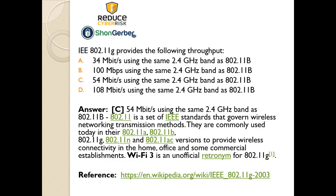You've got 802.11a, b, g, n, ac — these are the different versions available for wireless connectivity. For the CISSP, you'll have to understand what each of those bands plays into and how much throughput they can put out. It's very important to understand those. The CISSP is basically a mile wide and an inch deep, and this is part of the little inch you've got to know. You can find a reference at wikipedia.org, IEEE 802.11g-2000.